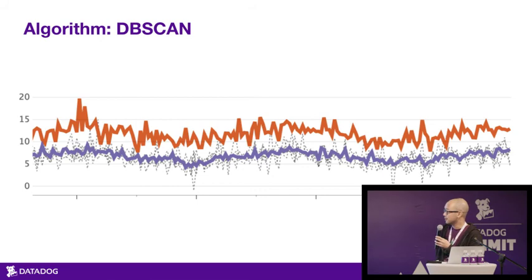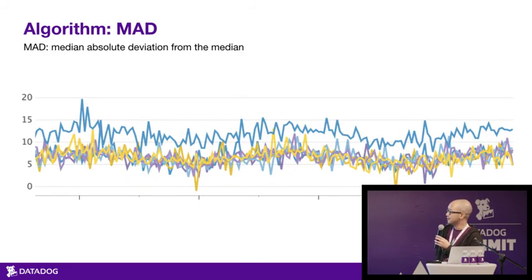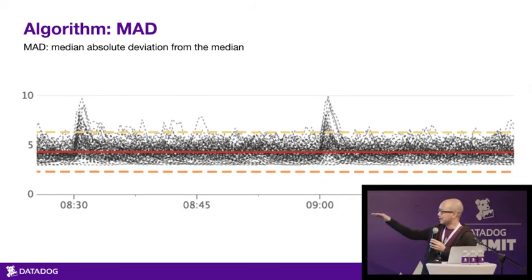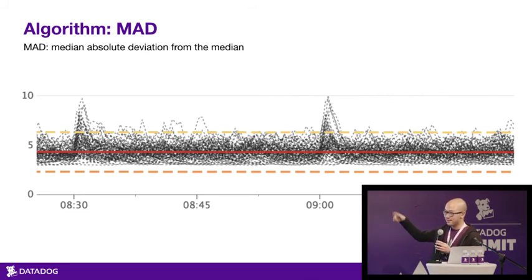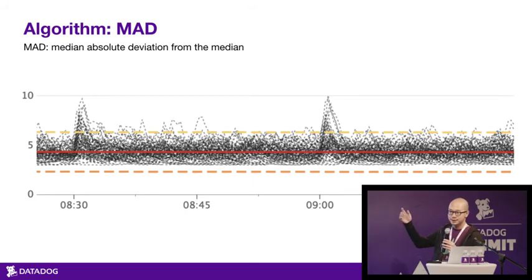The other algorithm is called MAD, which stands for Median Absolute Deviation from the Median. We take a slightly different approach: we find the median value of all the points — that's the thick red line — then calculate the MAD, which is the robust version of standard deviation, and add that to the median to get the dotted lines. If a certain percentage of a metric's points are outside those bands, we call it an outlier.